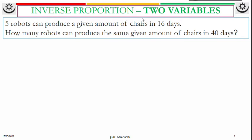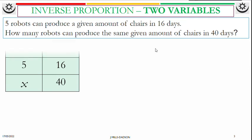Example 2. Two variables inverse. Five robots can produce a given amount of chairs in 16 days. How many robots can produce the same given amount of chairs in 40 days? Put it into a table form. We're talking about robots and days. First, five robots, 16 days. In the second sentence, we are using 40 days. So under days, we have 40. But we don't know how many robots.